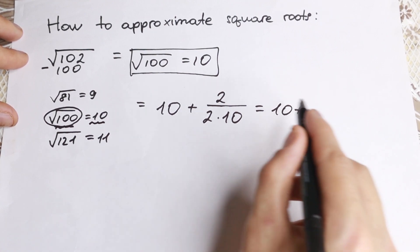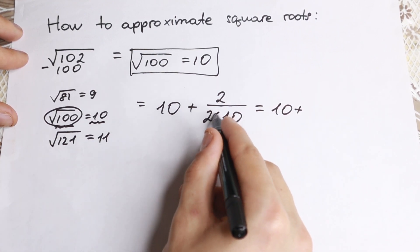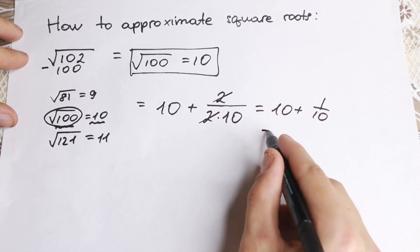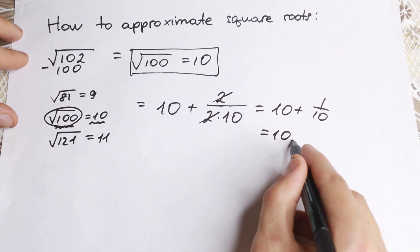We have 10 plus 2 divided by 2 times 10. We can easily cancel right here. So we have 1 over 10. So the value of this equals 10.1.